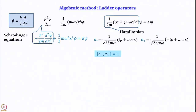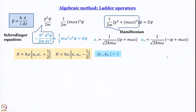We asked you to work out that the commutator of a₋ and a₊ is equal to +1, which means the commutator of a₊ and a₋ is −1. Since the commutator is not zero, the Hamiltonian is not simply a₋a₊ or a₊a₋. What we get is that the Hamiltonian is written as ℏω(a₊a₋ + ½), or equivalently ℏω(a₋a₊ − ½) — both are valid forms and we use whichever is more convenient.